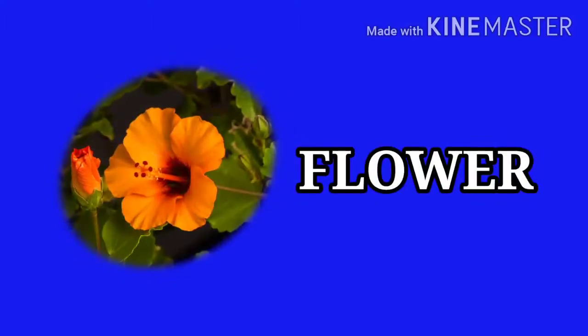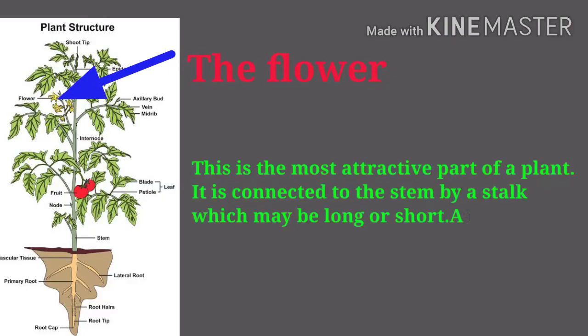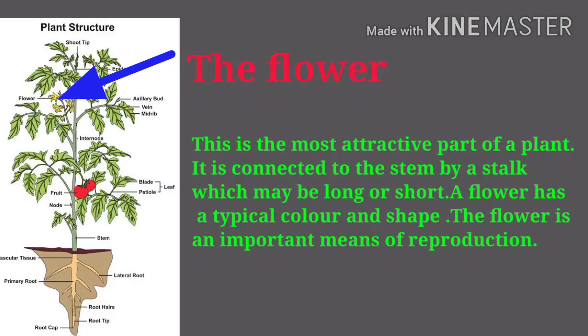The flower is the most attractive part of a plant. It is connected to the stem by a stalk, which may be long or short. A flower has a typical color and shape, and it is an important means of reproduction.